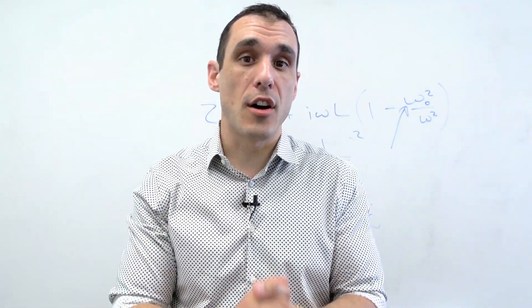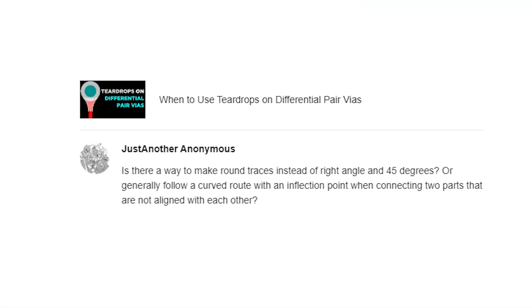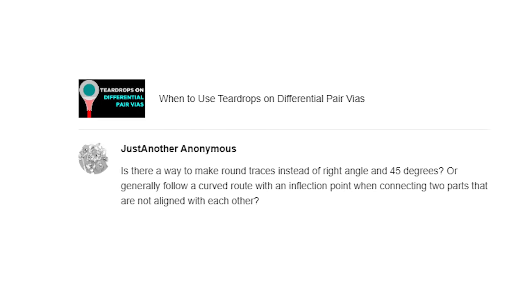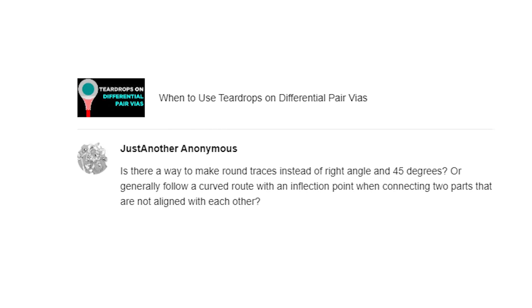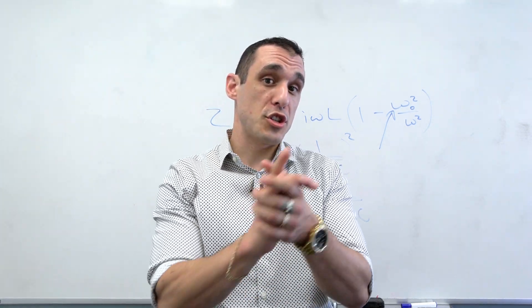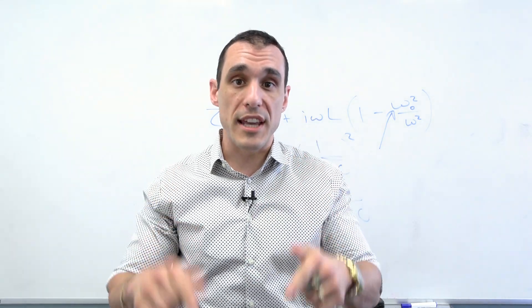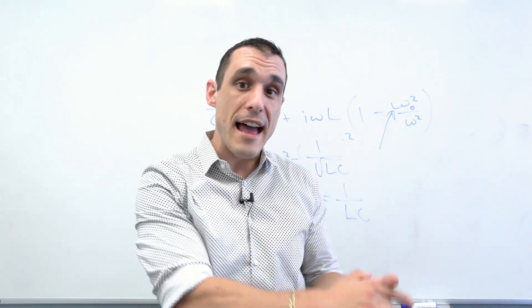For our next set of questions, we actually got several questions on our teardrops on differential pairs video. Just Another Anonymous writes: is there a way to make round traces instead of right-angle and 45-degree traces, or generally follow a curved route with an inflection point when connecting two parts that are not aligned with each other? Yes, there is. Phil actually showed us how to do this in an earlier video, and we will link to that video in the description. I'm also going to show you how to do it right now.